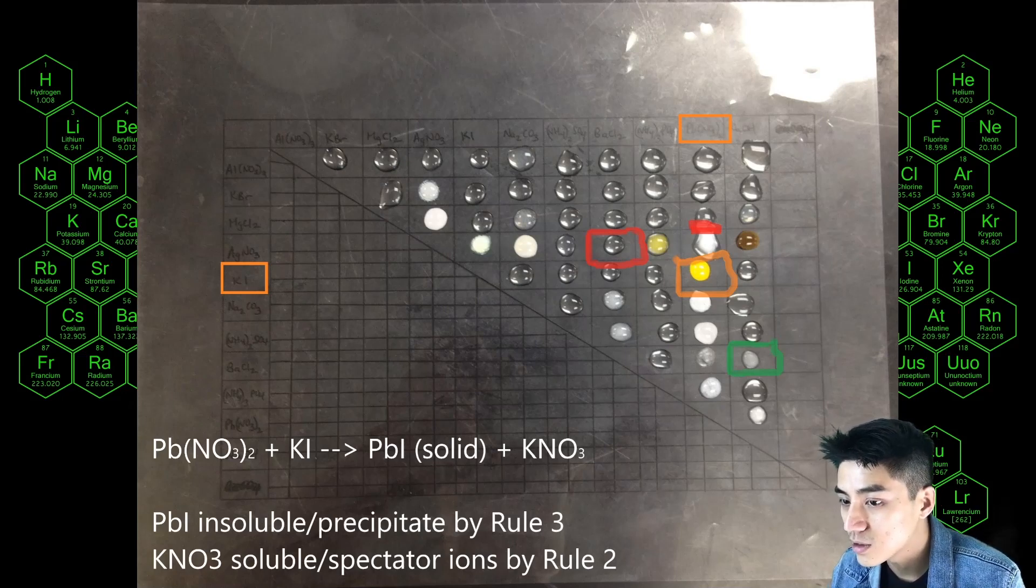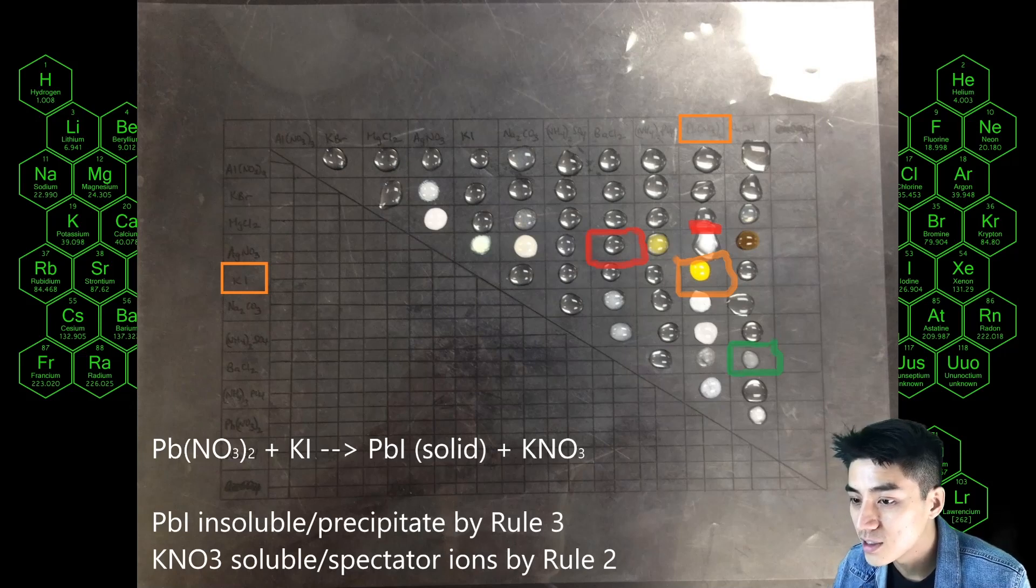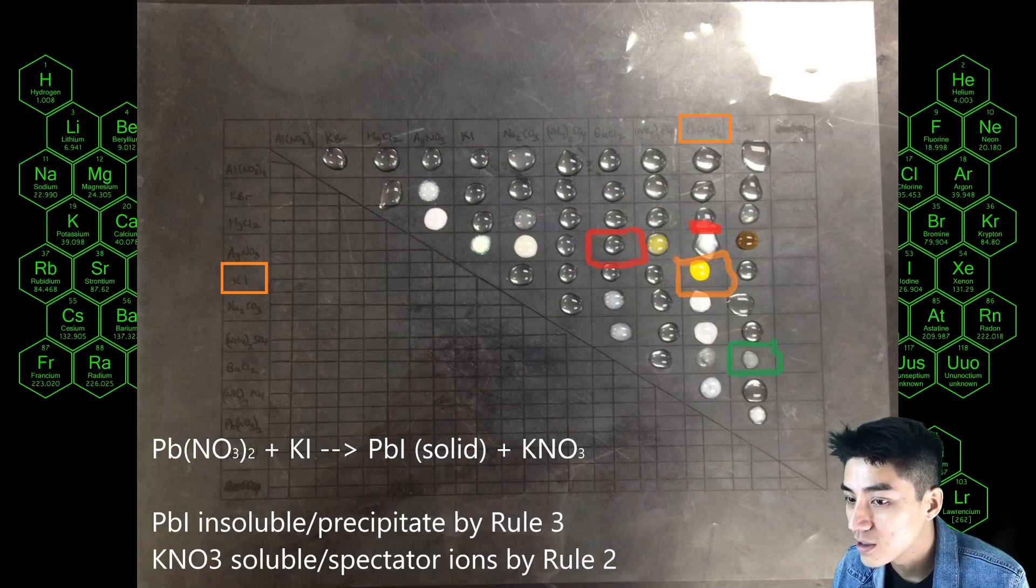And then by rule two you have potassium nitrate which is soluble, so these are your spectator ions. Remember a spectator ion does not contribute to the reaction so it doesn't help form the solid. The solid is really the thing that we care about and in this case it's PbI or lead iodide.